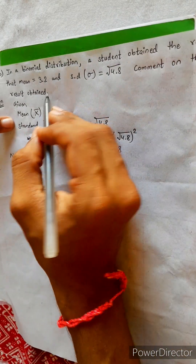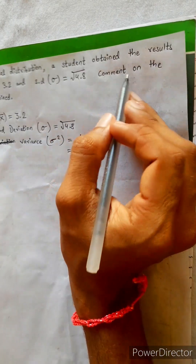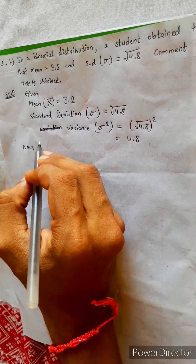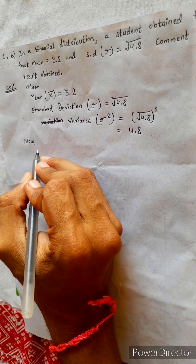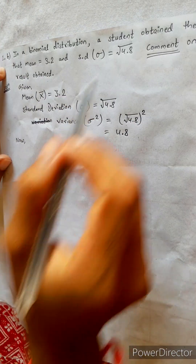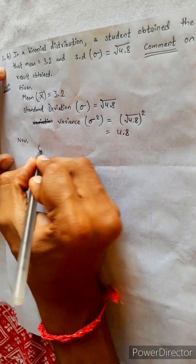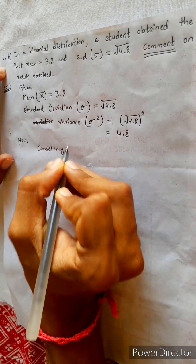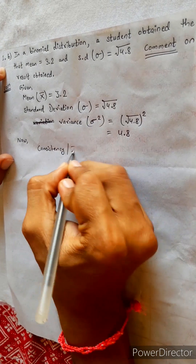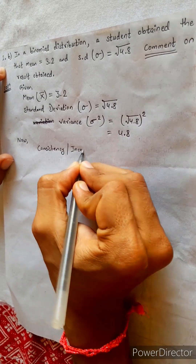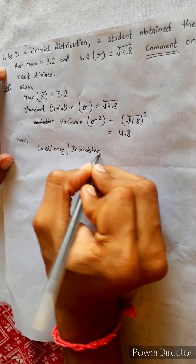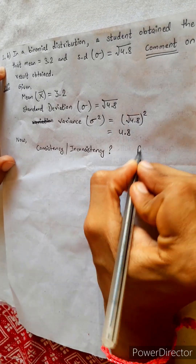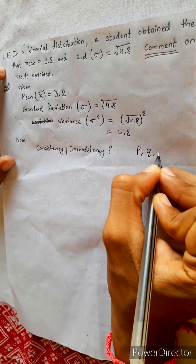Comment on the result obtained. We need to make a comment. For this, we check consistency or inconsistency. To check consistency, we need P, Q, R, N.